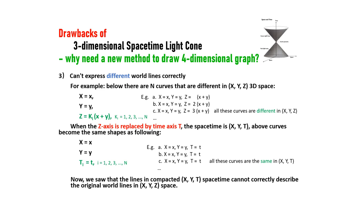All these curves are different in XYZ space. When the Z axis is replaced by time axis T, the spacetime is X, Y, T. Above curves become the same shape as the following: X equals X, Y equals Y, and T(i) equals T. So X, Y, T, all of them will be the same. All these curves are the same in XYT.